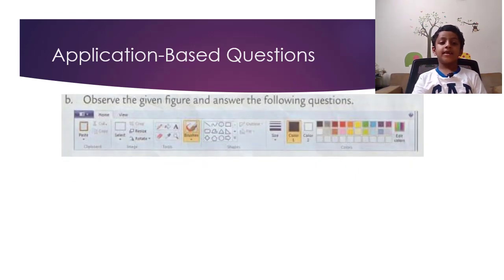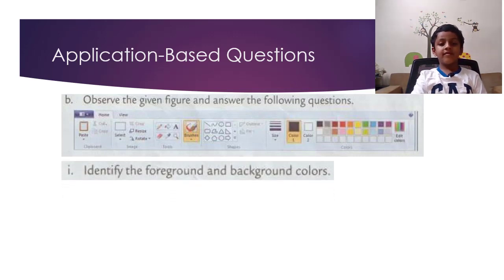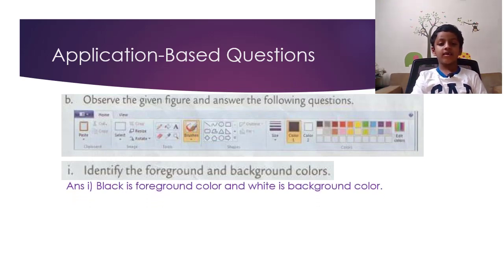Question B. Observe the given figure and answer the following questions. Identify the foreground and background colors. So the answer is Black is the foreground color and White is the background color.